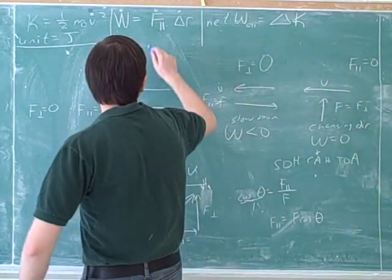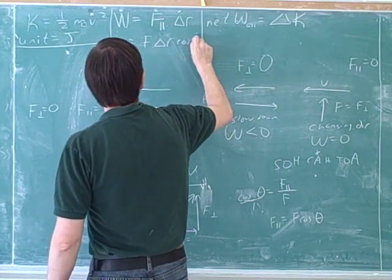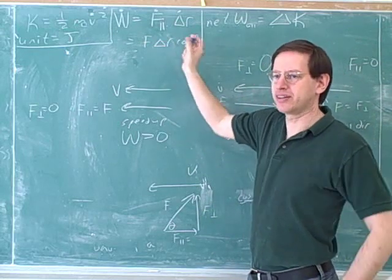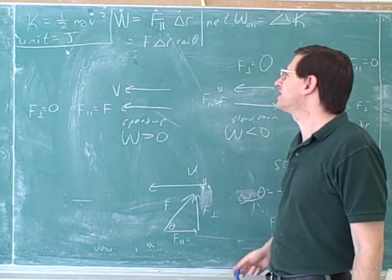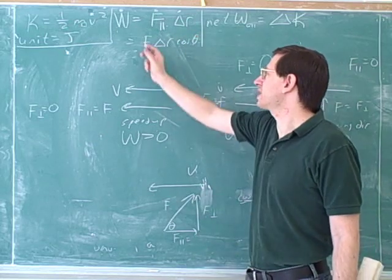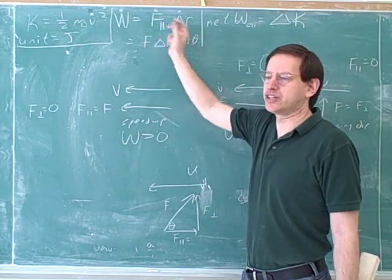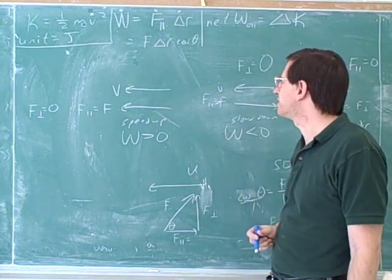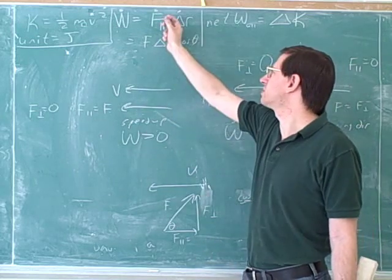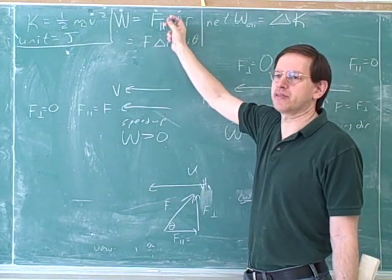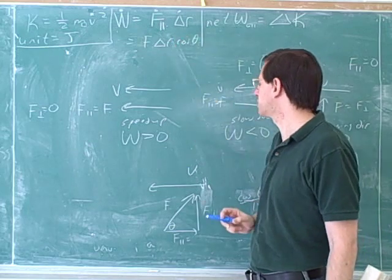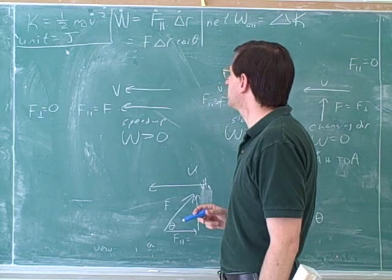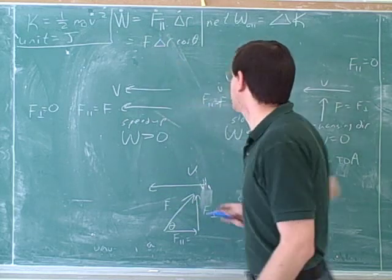So that gives us another equation for work: F times the displacement times the cosine of theta. The important thing to see is that the only purpose of cosine theta is to isolate the component of the overall force that's parallel to the movement. For a beginning student, it's better to use this formula because it gives you better intuition, and we don't have to get into the trig too much. So we'll go back to using this equation. This is our general equation for work.